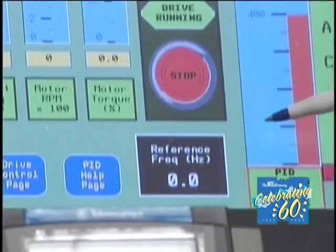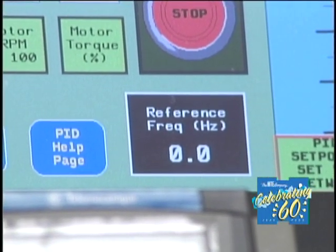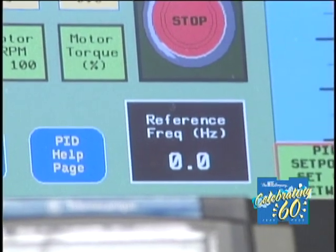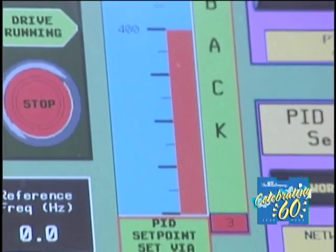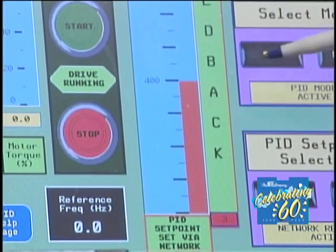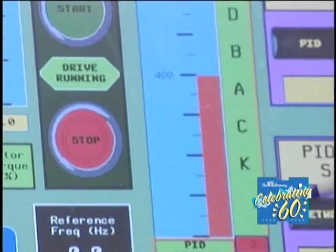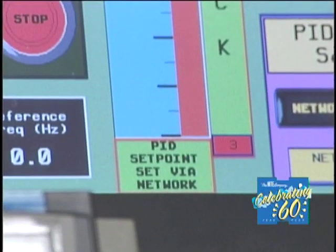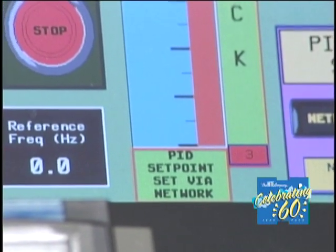We have the reference frequency here, which is what the drive is being told to run at — that will come from the PI controller. In the middle we have a bar graph on which we set our setpoint for the PI demonstration, and then for feedback there is a little red rectangle that will float depending on where the object being controlled is.